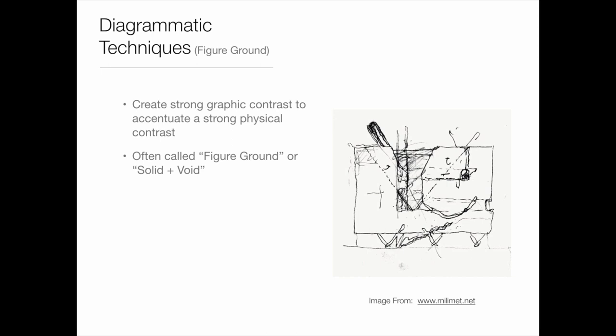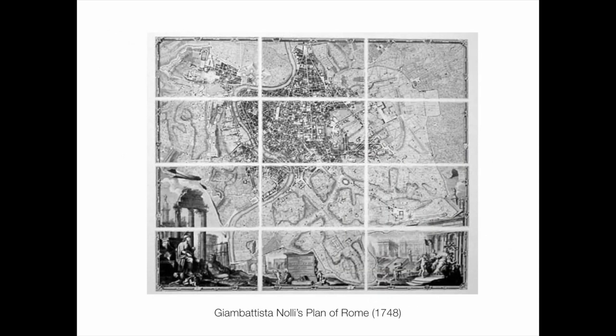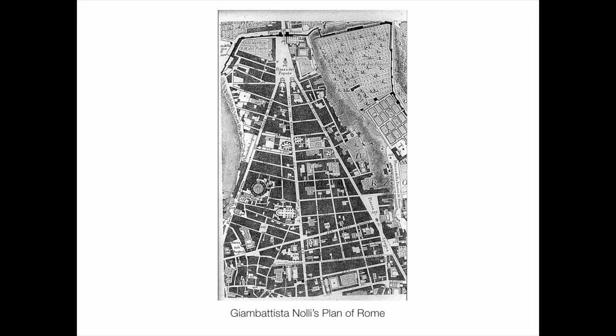We'll start with the figure ground technique. The idea behind figure ground is fundamentally about a strong contrast in your design—something solid versus something not, something public versus something private. We show that through a solid and void type diagram. We'll throw it back to 1748—this is Giovanni Battista Nolli's plan of Rome. He drew this plan, but it's actually a diagram.